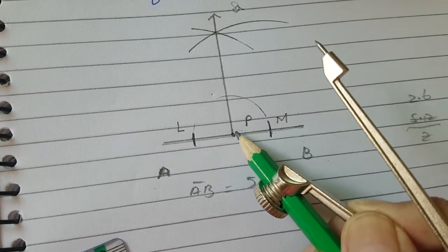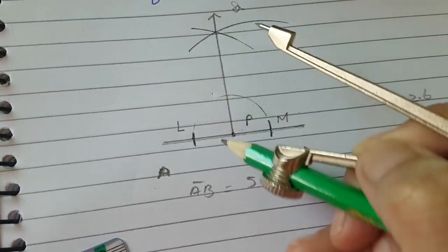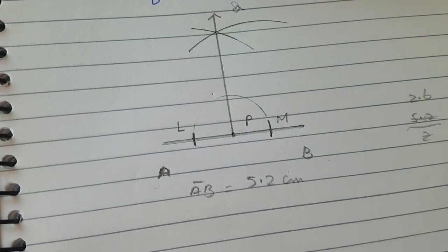That's why it is a bisector and it is perpendicular because it is drawn perpendicularly upon the line.